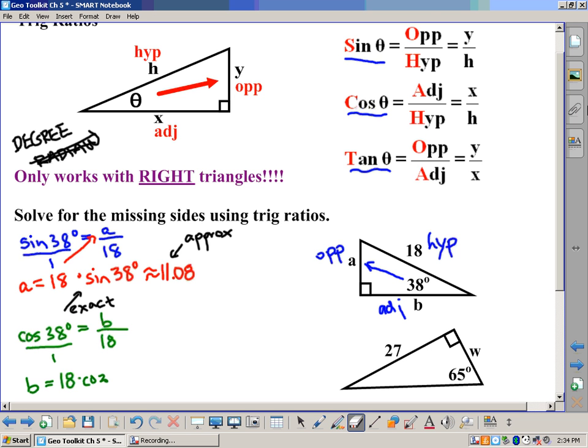Oops, a little typo there. Go ahead, grab your calculator. Punch that in. And it should be, if we round off to two places, in this case about 14.18 units. So that's the answer for B there.